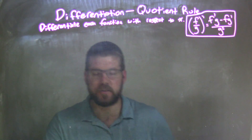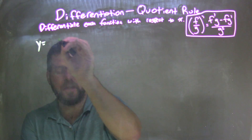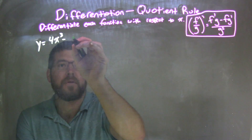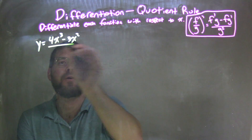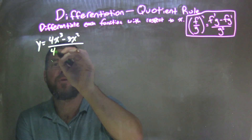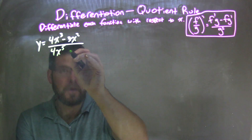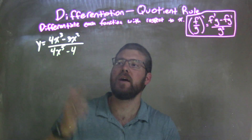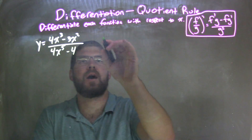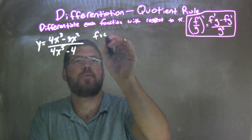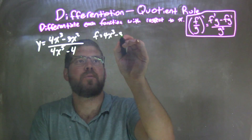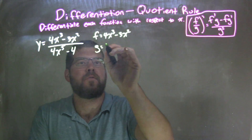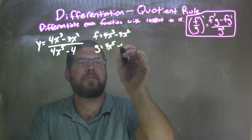So if I was given this function — y equals 4x to the third minus 3x squared, all over 4x to the fifth minus 4 — since I have a quotient function here, I'm going to label the numerator f: 4x to the third minus 3x squared, and the denominator g: 4x to the fifth minus 4.